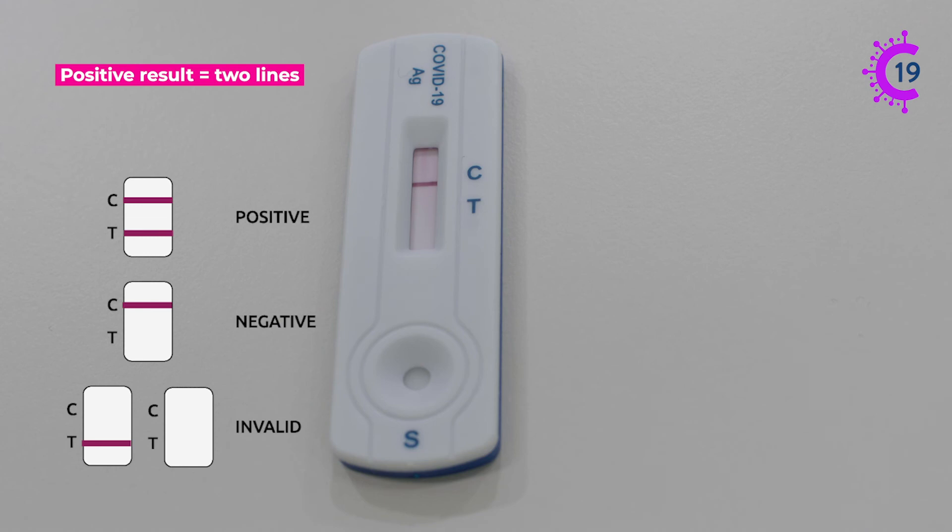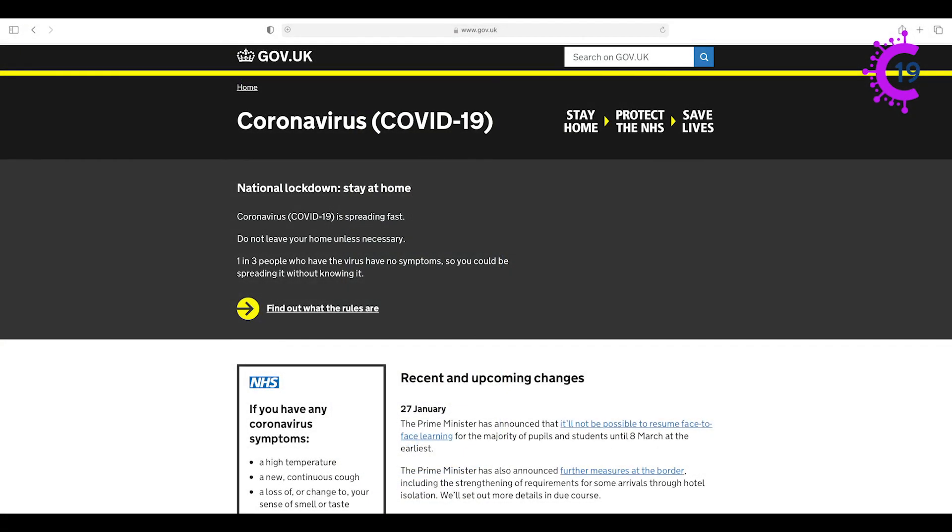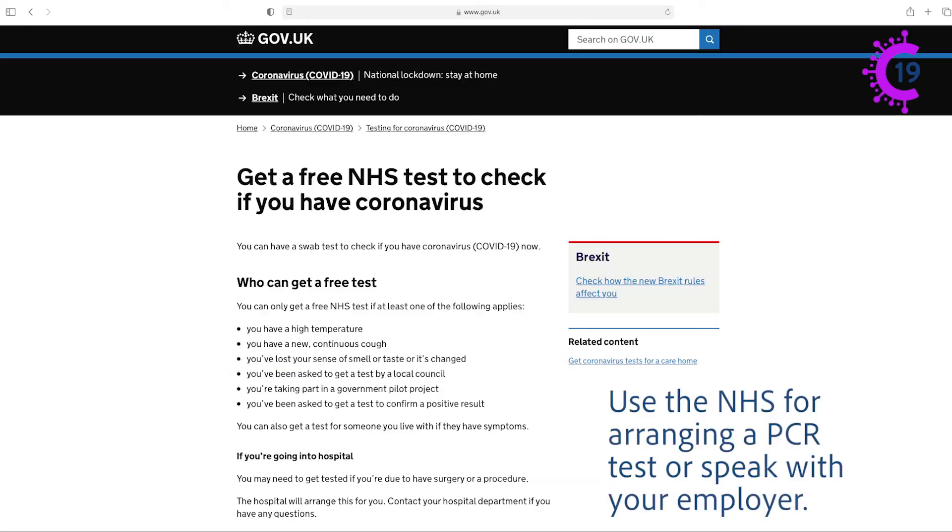If there was no line visible at the T this means the test result is negative and it's likely you did not have coronavirus at the time that this sample was taken. However, you should still continue to follow government guidance regarding social distancing and hand hygiene and arrange a PCR test if you develop any symptoms of coronavirus.